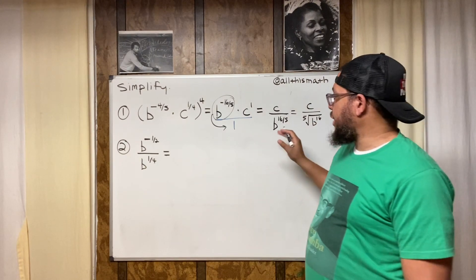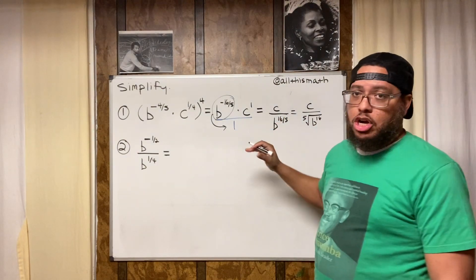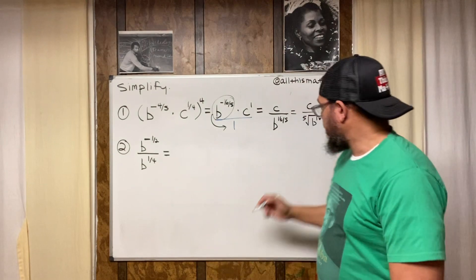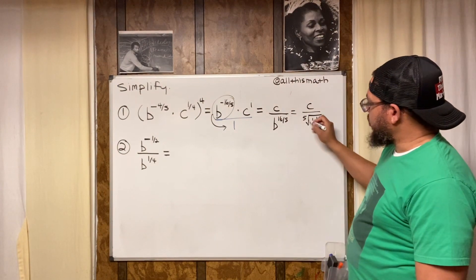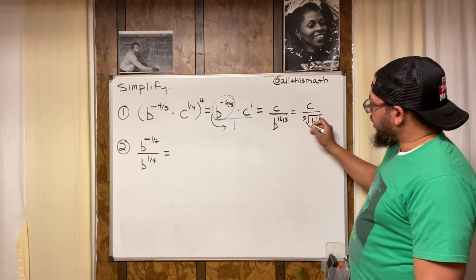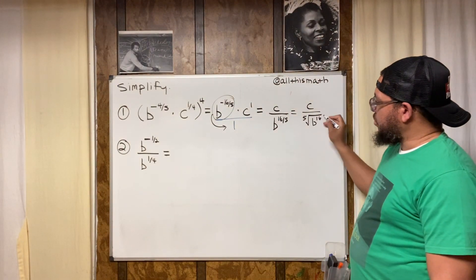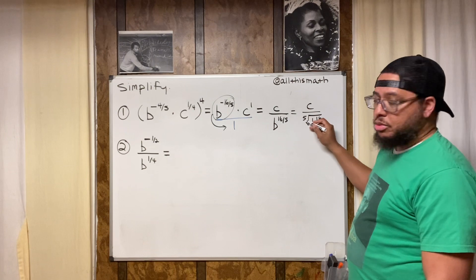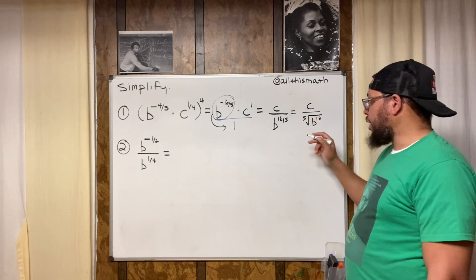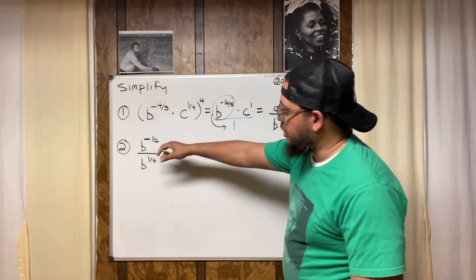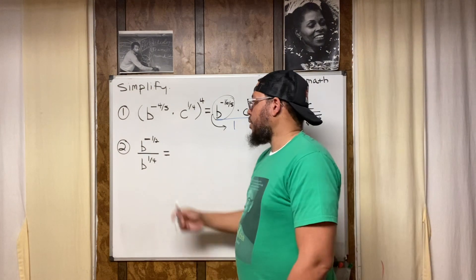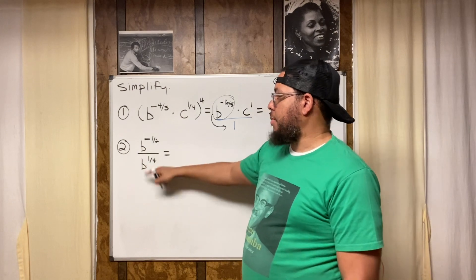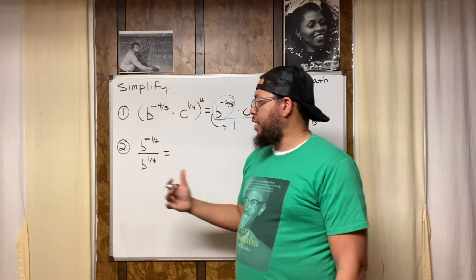Whenever you have a rational exponent, that expression can be rewritten in radical form. The radical sign looks like a long division bar with a little tail — that's the radical sign. Now let's look at number two: b to the negative one-half divided by b to the one-fourth.